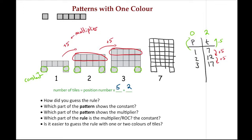Which part of the pattern shows the constant? The two legs. And which part shows the multiplier? A row of five. Which part of the rule is the multiplier and which part is the constant? The multiplier m equals five and our constant is two.